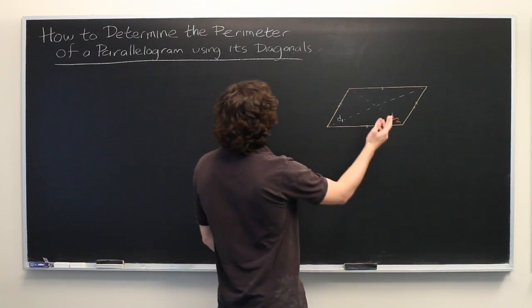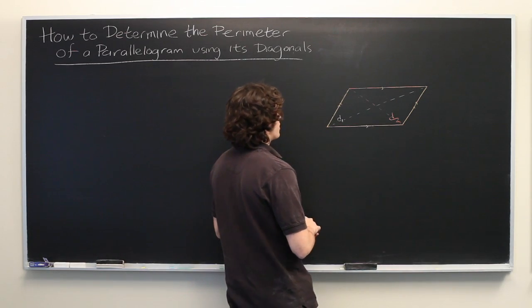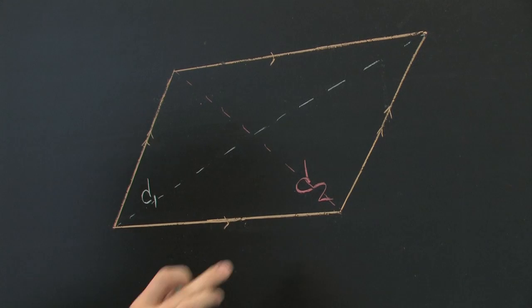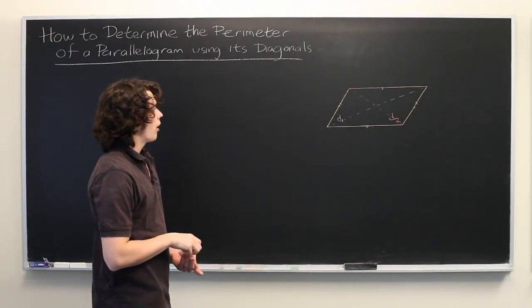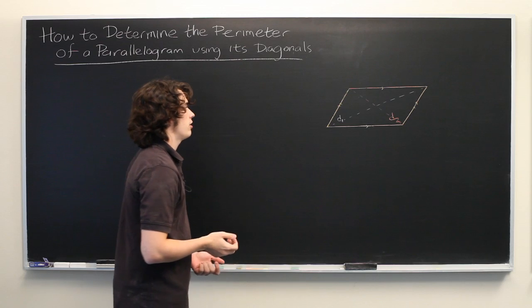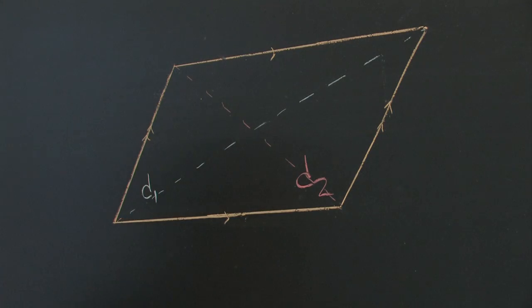So here we have some parallelogram and we are told the lengths of its diagonals d1 and d2. And what we ideally want is some formula that will tell us the perimeter of the parallelogram using only d1 and d2.